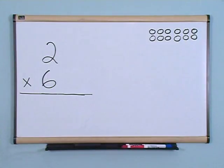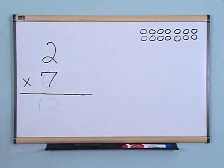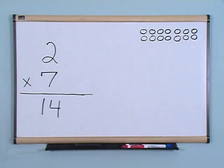2 x 6 is? 2 x 6 is 12. 2 x 7 is? 14. 2 x 7 is 14.